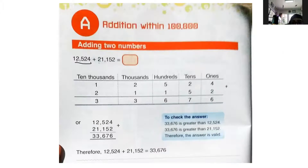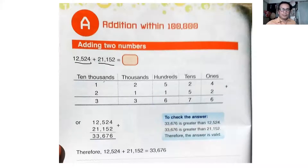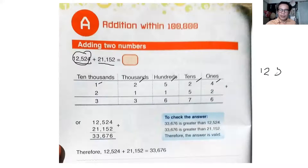So 12,524 plus 21,152 — you can answer this way. You have to write one, two, five, two, four — that's the first number. Or you can write it vertically like this: 1, 2, comma, 5, 2, 4.